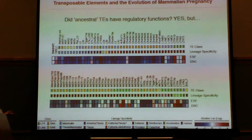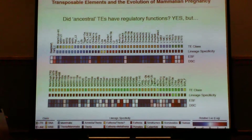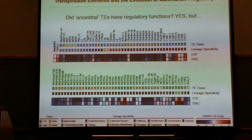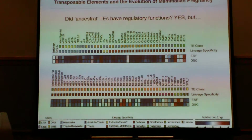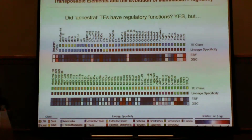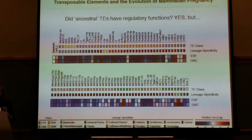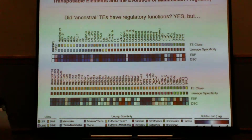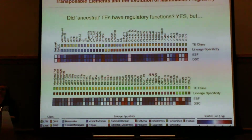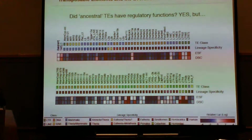Most of these transposable elements do have some sort of function. Interestingly, we naively entered the experiment expecting three roughly equal classes — enhancer, no function, and repressor — but what we found is that 20 elements seem to have enhancer function, 14 seem to have no function, and 51 are repressors, which was surprising.